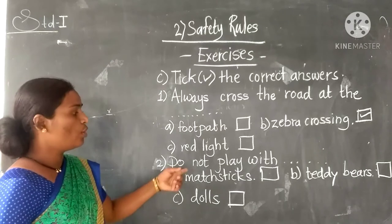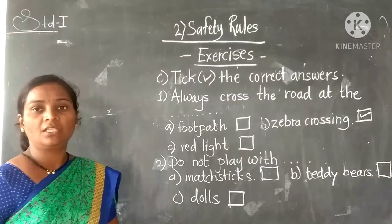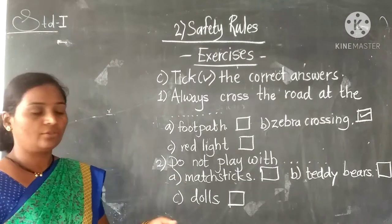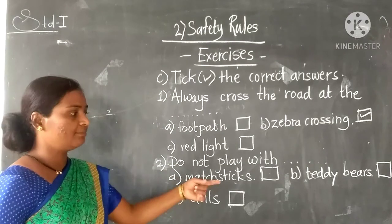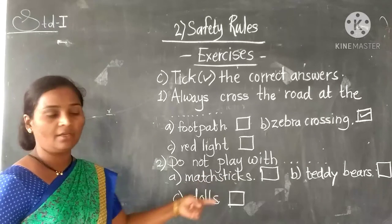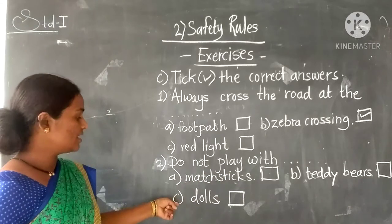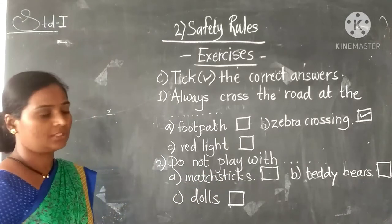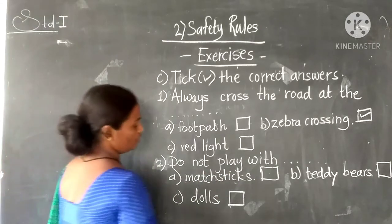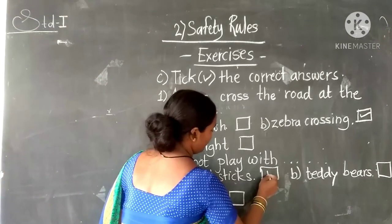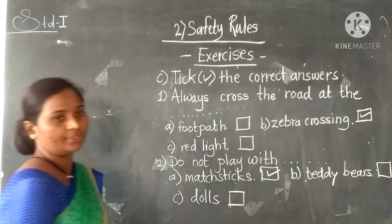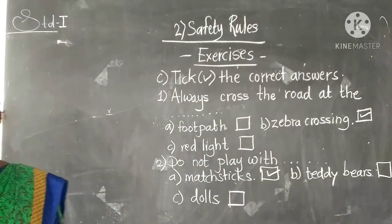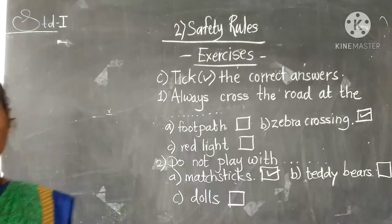Second question: do not play with blank. Options are — A: mastic, B: teddy bear, C: dots. You should not play with mastic, so tick option A.